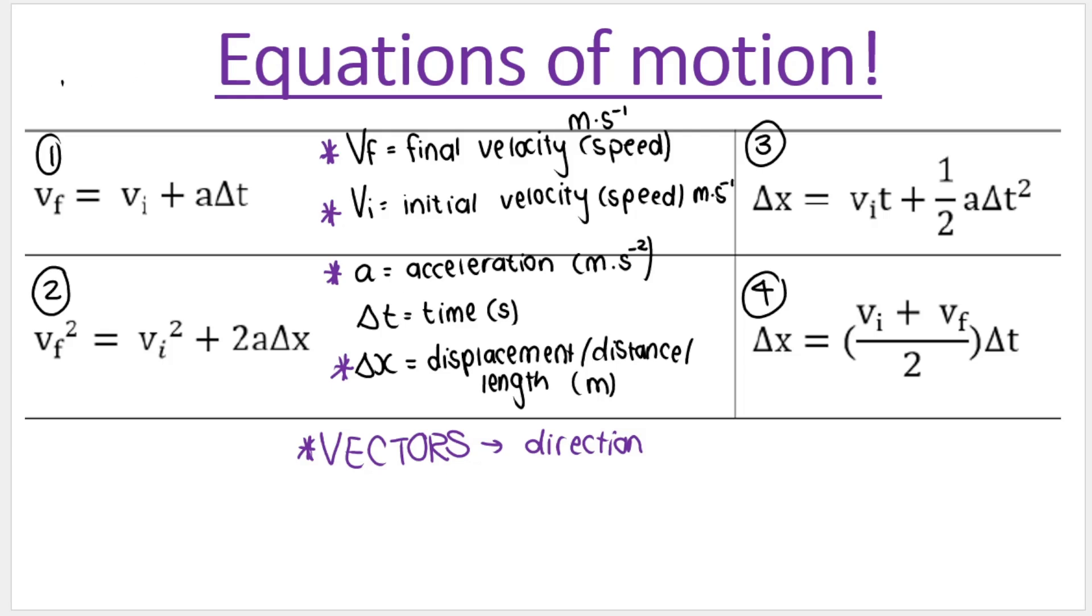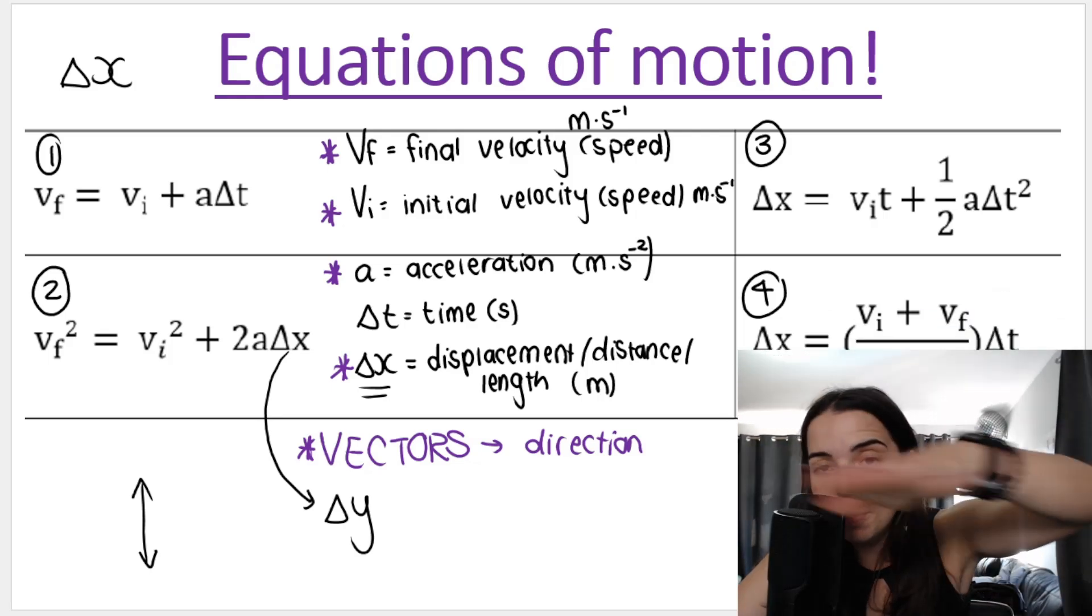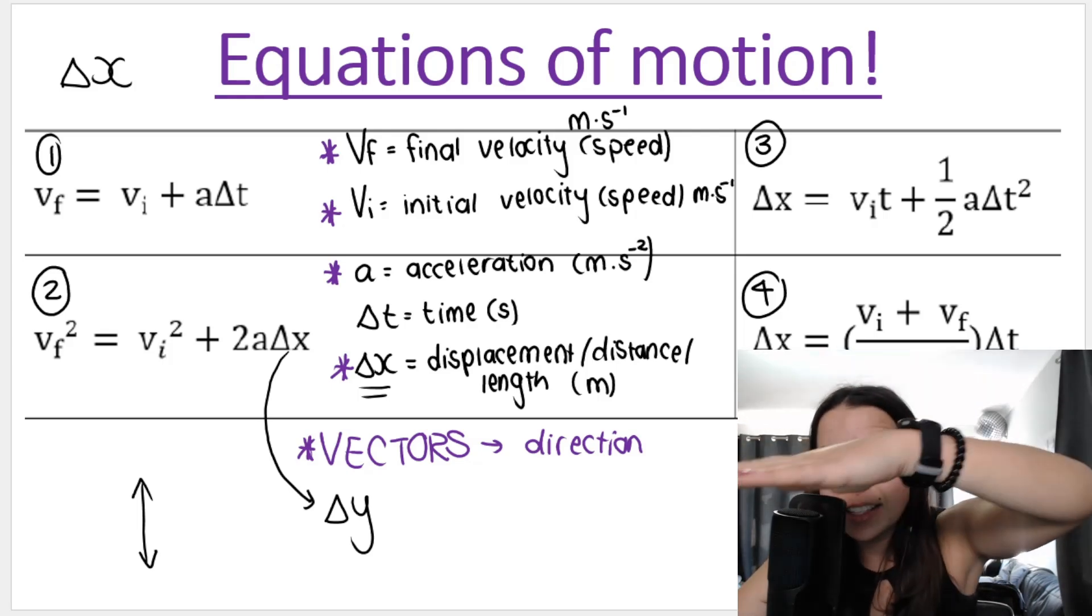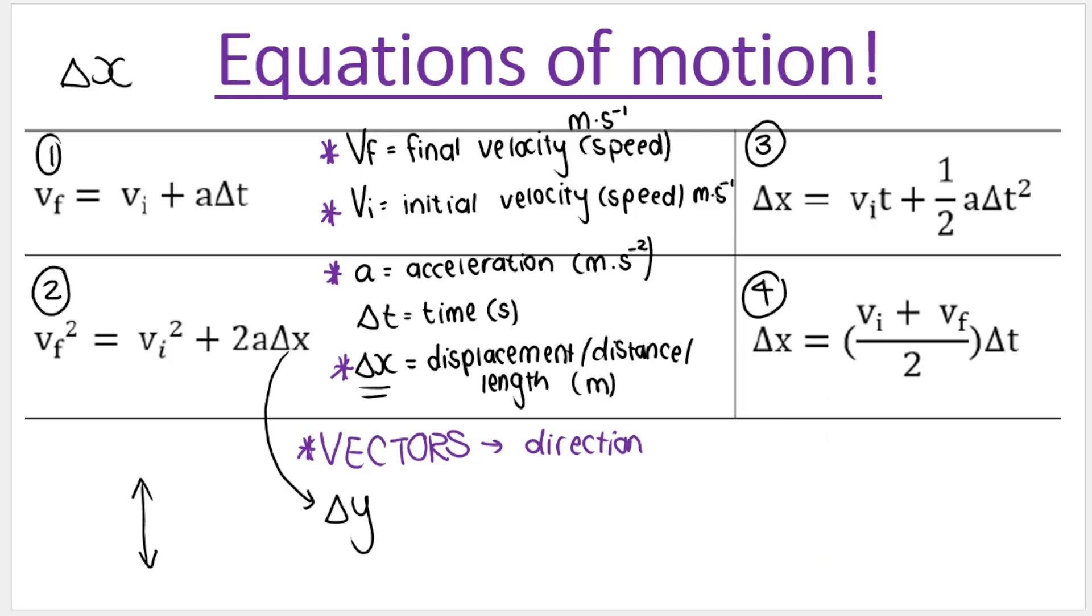Then of course, we have displacement or change in position. This can also be referred to in our equation questions as distance or length. It's how far we are traveling. So that is the triangle X. And when we do vertical motion, up-down motion, you will see this in grade 12, we swap out the triangle X for triangle Y. And the reason why is because triangle X, change in position in the X direction, that refers to horizontal movement. So think about along the X axis, and change in Y is vertical movement, so along the Y axis. And then last but definitely not least, we have time, which is measured in seconds.